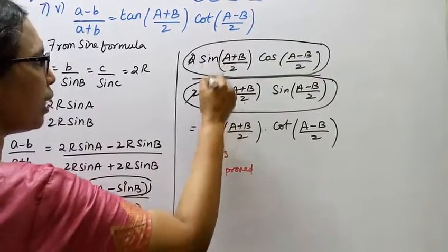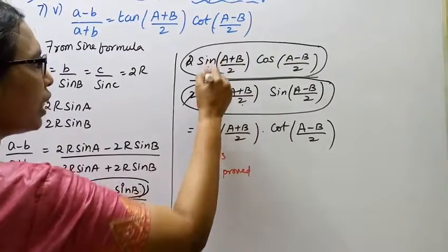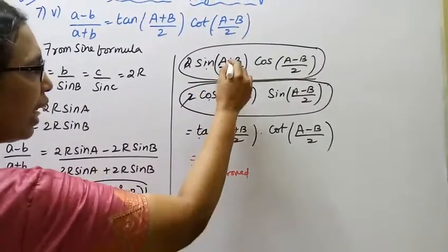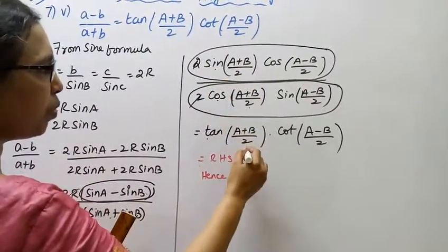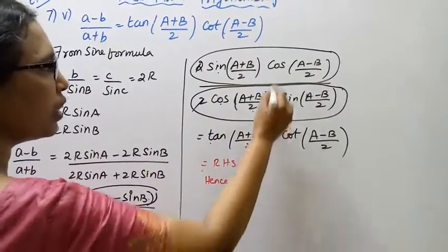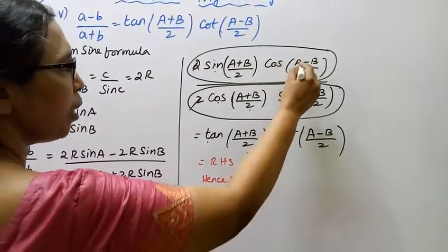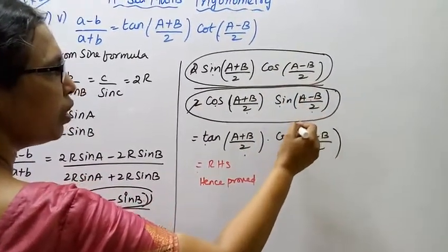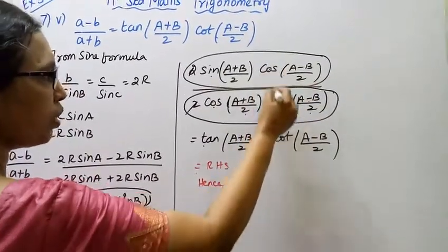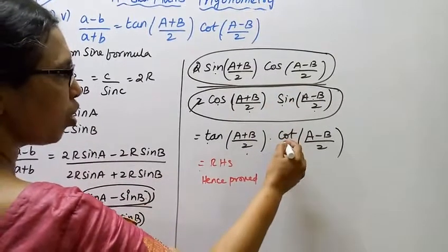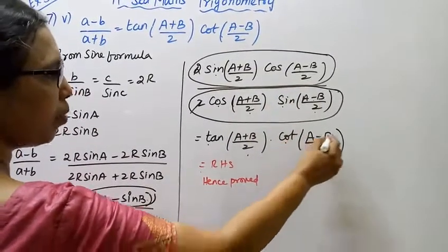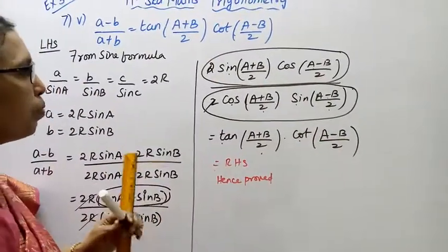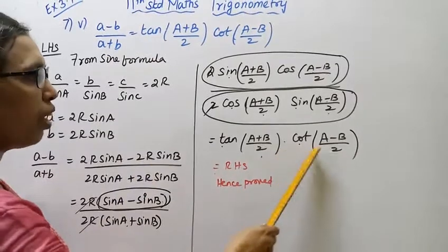After cancellation, sin divided by cos gives tan((A+B)/2), and cos divided by sin gives cot((A-B)/2). So the left hand side equals tan((A+B)/2) into cot((A-B)/2), which is the right hand side. Hence proved.